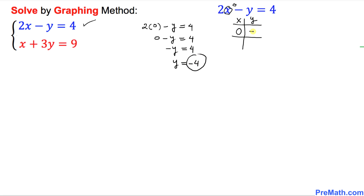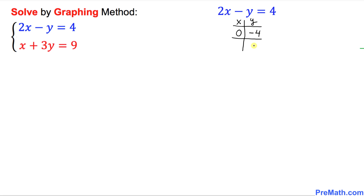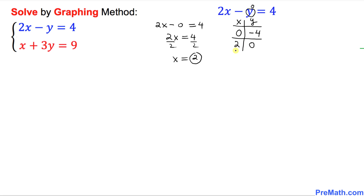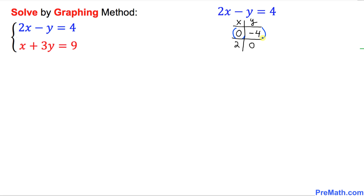Next I am going to put y equal to zero and see what x turns out to be. Wherever we see y, replace it with zero. So 2x minus 0 equals 4, which gives 2x equals 4. Divide both sides by 2, and x turns out to be 2.